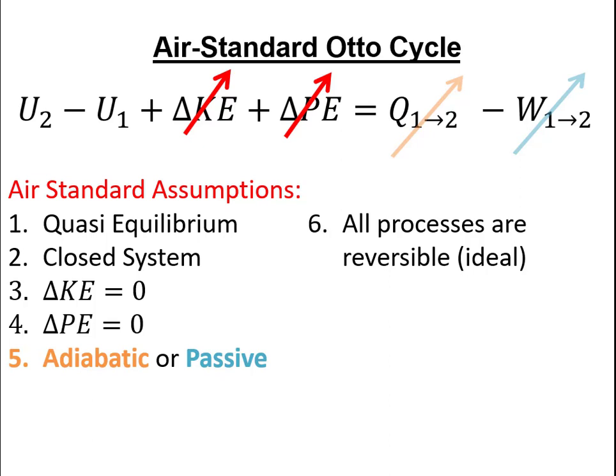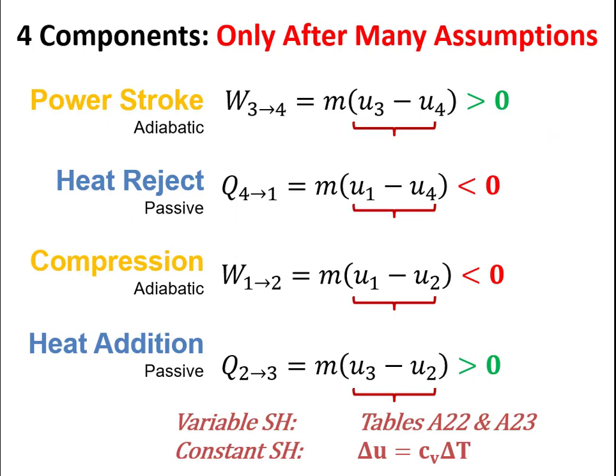For each process in a closed system first law analysis, we neglect changes in kinetic and potential energy. For each process we assume either adiabatic (no heat) or passive (no work in or out). Making all these assumptions gives equations from the first law telling us either the power generated or consumed and the heat added or lost from the system.